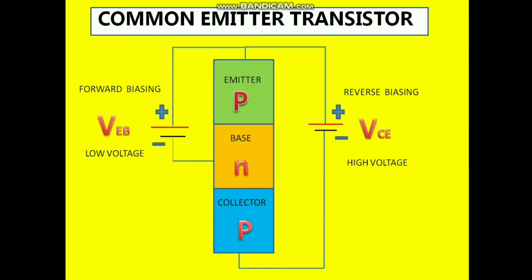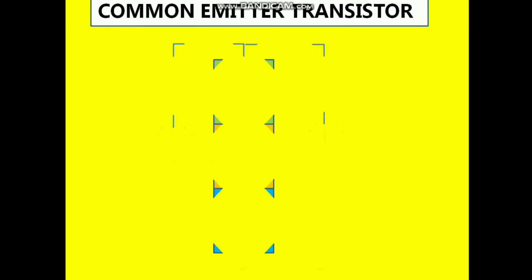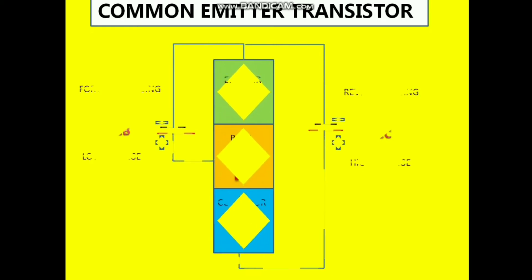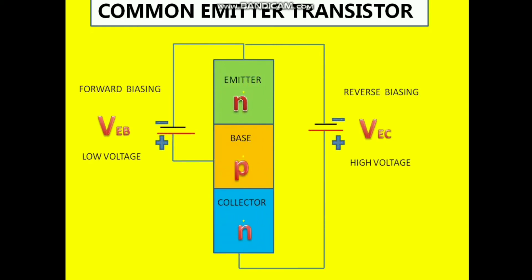Between emitter and base there should be forward biasing, and between emitter and collector there should be reverse biasing. The forward biasing voltage should be very low so that the current should be maximum and resistance should be minimum. At the same time, the reverse biasing voltage should be very high, which means a low value of current and the value of resistance increases.